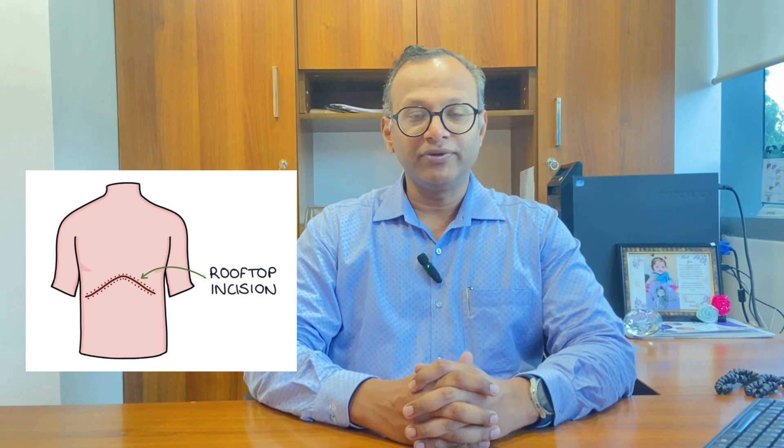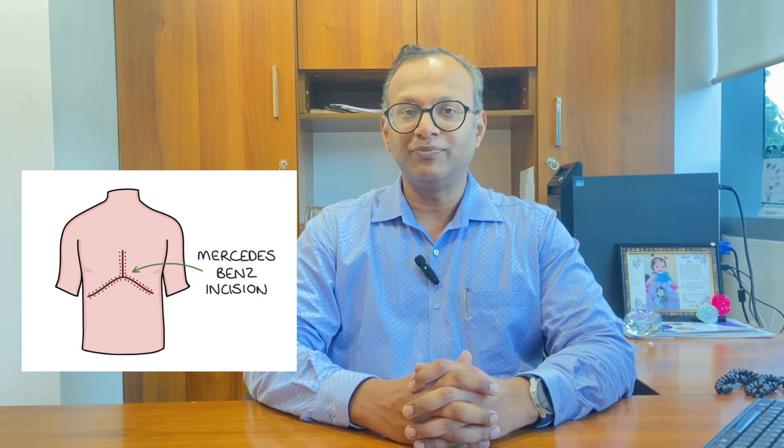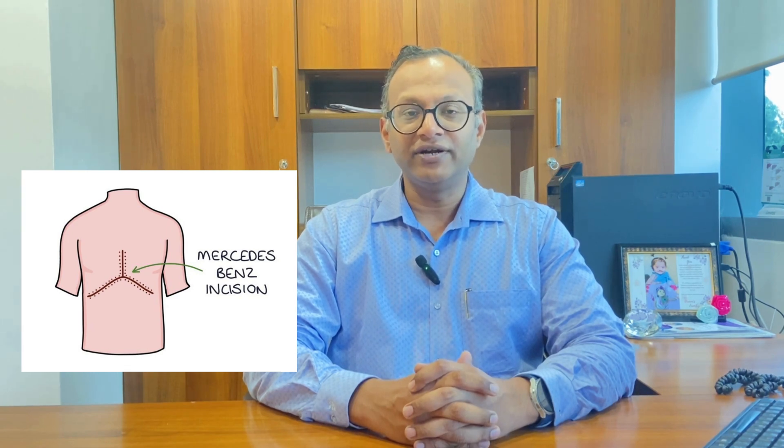The surgical area is the upper part of the abdomen. Before the surgery, an incision is made below the rib cage, which can look like a rooftop incision or sometimes a Mercedes-Benz sign — like an inverted Y. Once the doctor enters into the abdomen, the connections and attachments of the liver to the abdominal cavity are first carefully dissected out so that there is no extra bleeding.